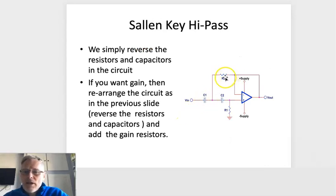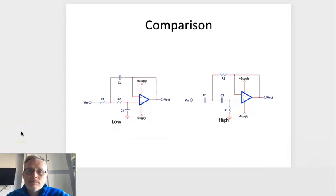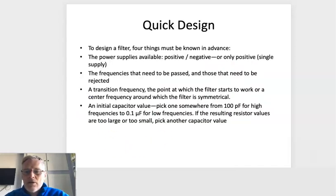High-pass is simply a case of reversing the C's for R's and the R's for C's, and the design equations are identical. If we look at them side by side, you'll see here we've got our low pass design and our high pass design. The only thing that's changed: the C's changed to an R, the R's have changed to C's, so C's changed to an R and that's it.